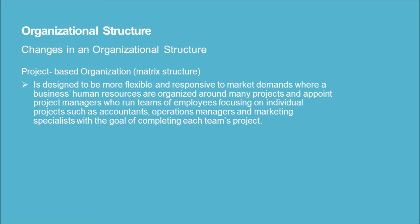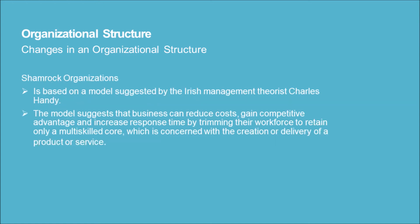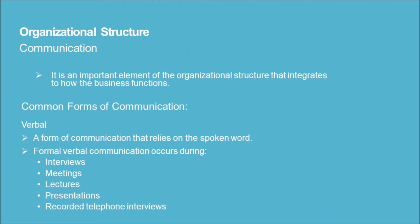Changes in organizational structure: 1) Project-based organization or matrix structure — designed to be more flexible and responsive to market demands. Human resources are organized around projects, with project managers running teams of employees such as accountants, operations managers, and marketing specialists, each focused on completing their team's project. 2) Shamrock organizations — based on a model suggested by Irish management theorist Charles Handy. The model suggests businesses can reduce costs, gain competitive advantage, and increase response time by trimming their workforce to retain only a multi-skilled core concerned with the creation or delivery of a product or service.